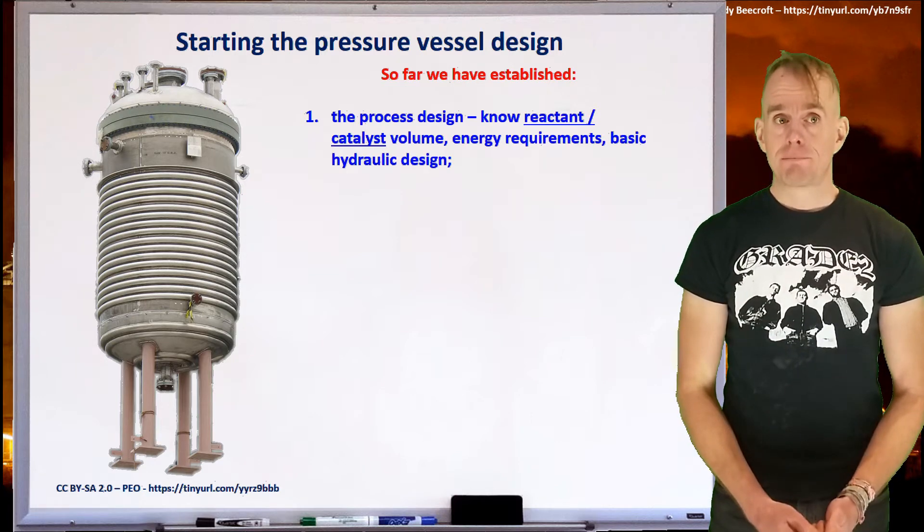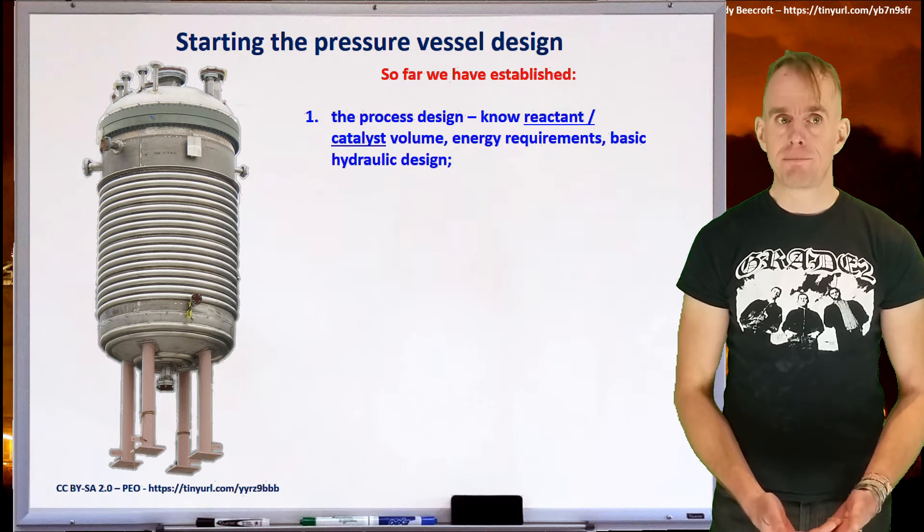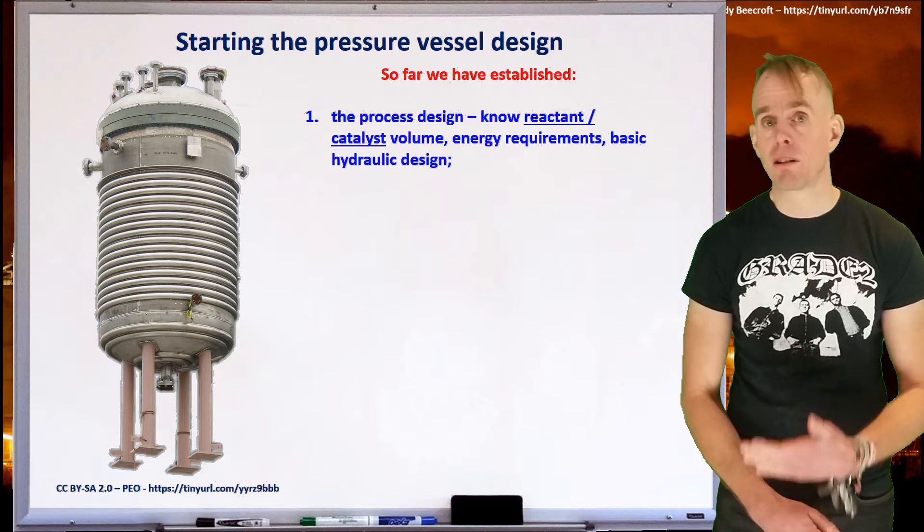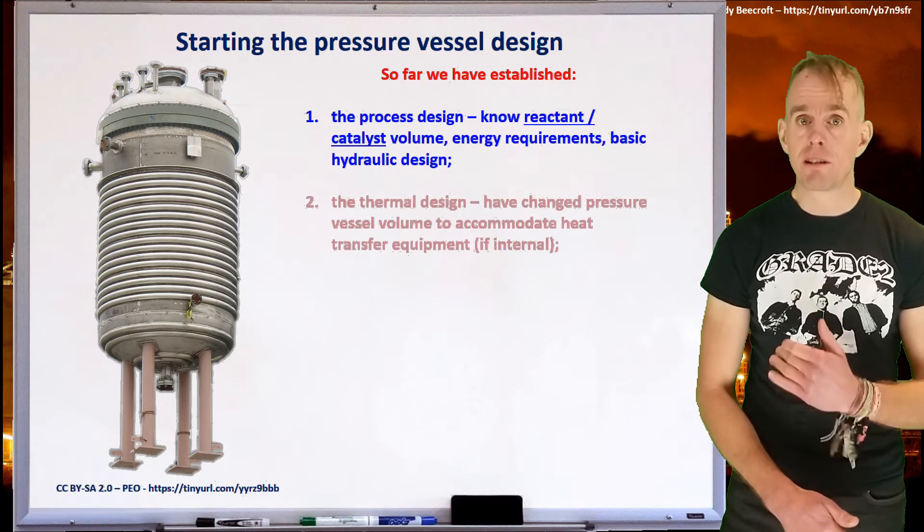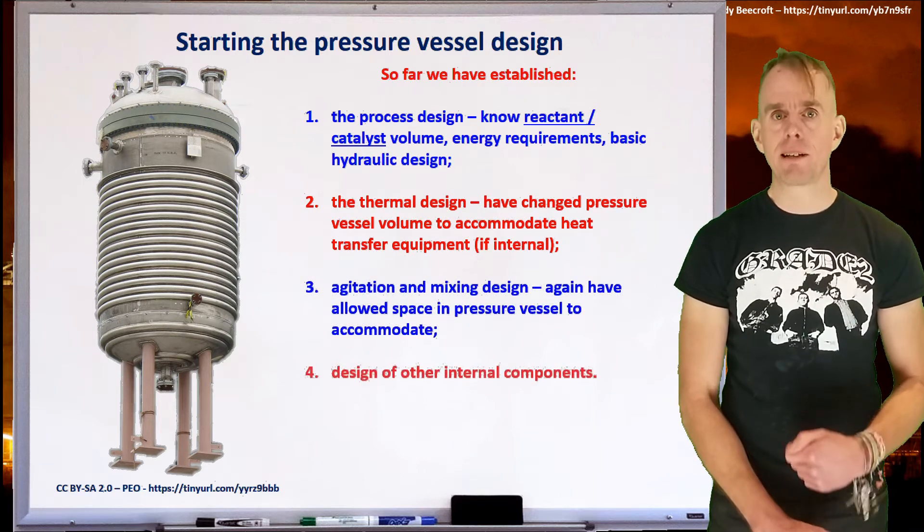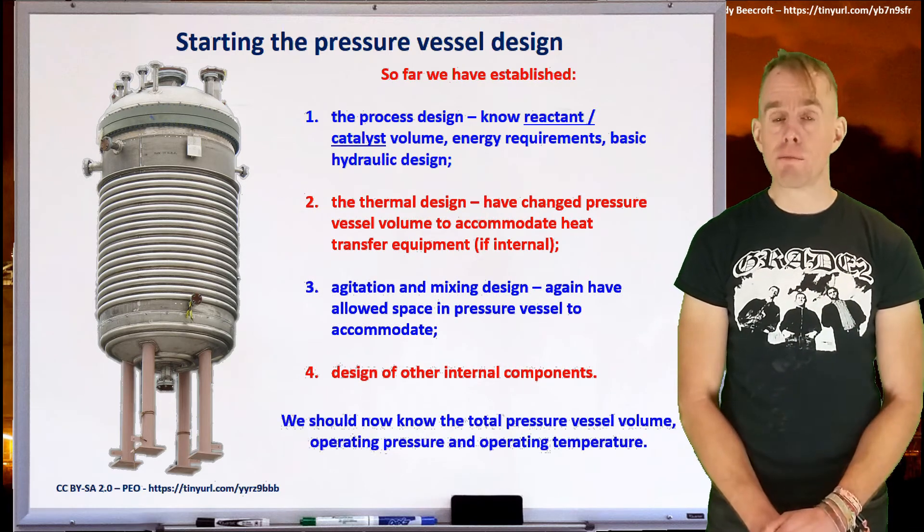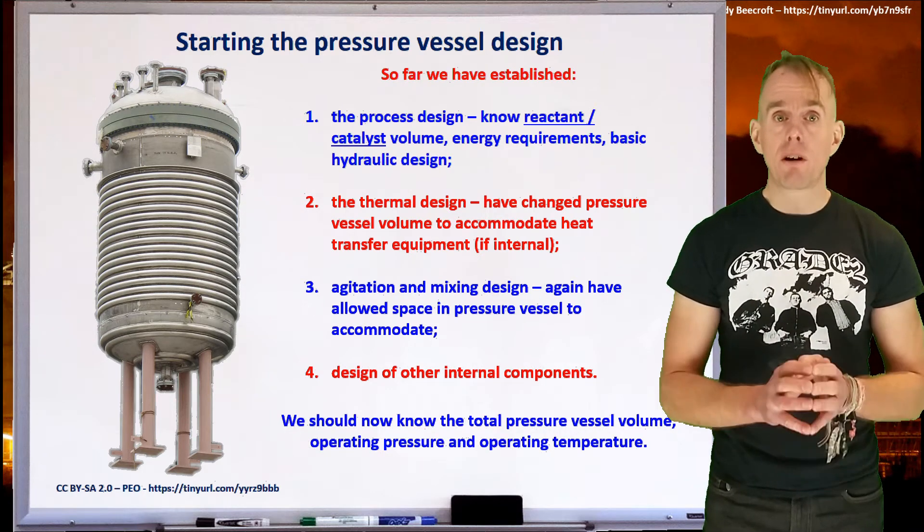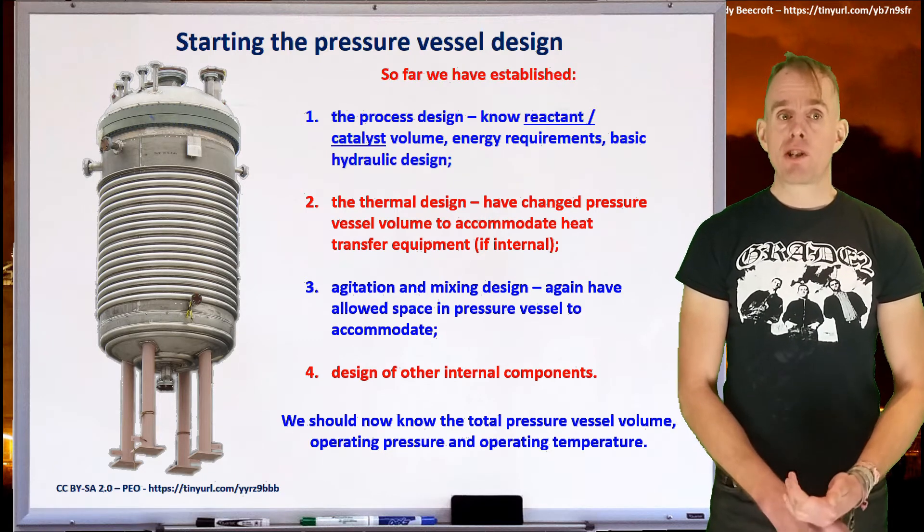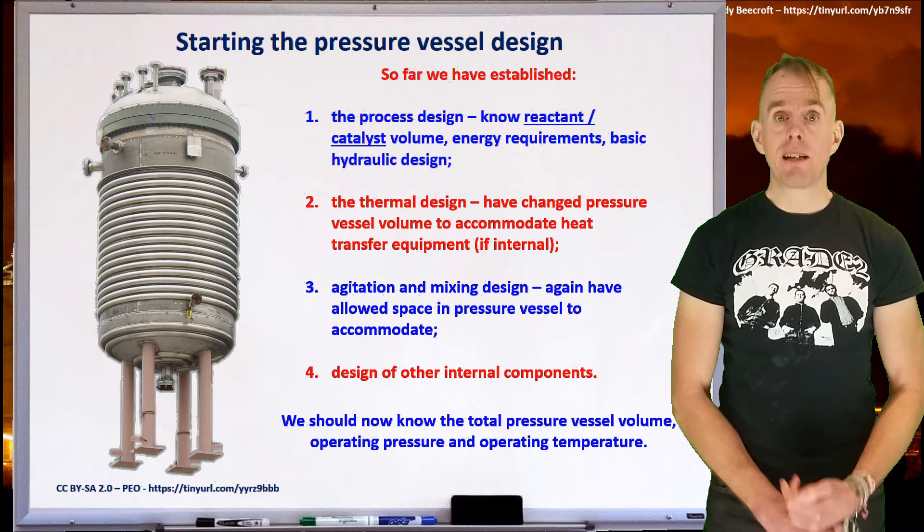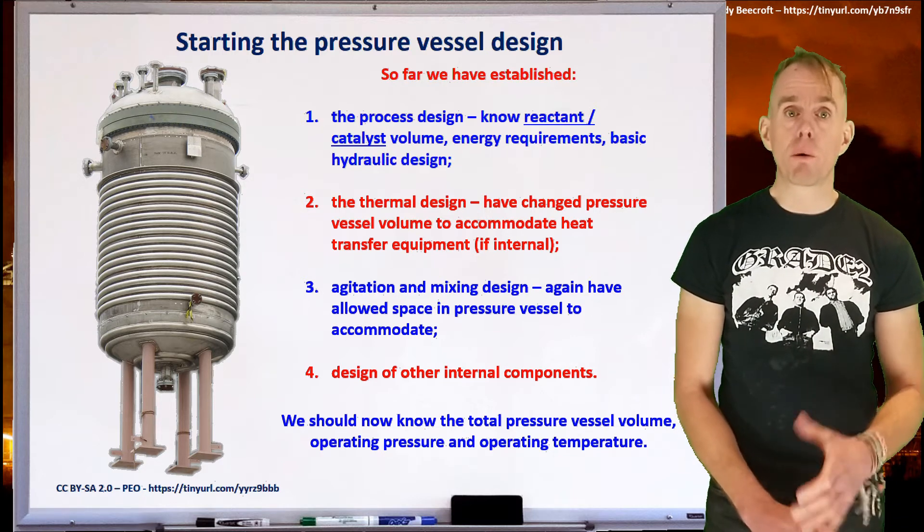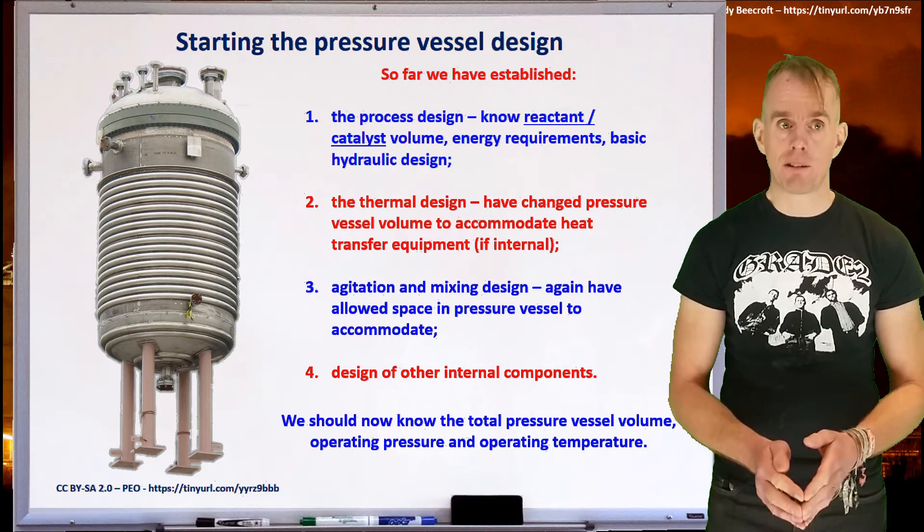So if our ultimate aim is to get to something that looks a bit like that, we need to start somewhere. So we've started by thinking about the process design. We know about the reactant or catalyst volume, we know about the energy requirements, and we know the basic hydraulics. All these are essential to proceed to the next step. We've thought about the thermal design as well. We've thought in detail about how we're going to add or remove heat from the system and whether that does or doesn't alter the pressure vessel specifications. We've thought about agitation and mixing. Firstly, whether it's required. And secondly, if it is, for example, in solid-liquid systems, what sort of agitator we're going to use and what sort of additional space within the pressure vessel that will take.